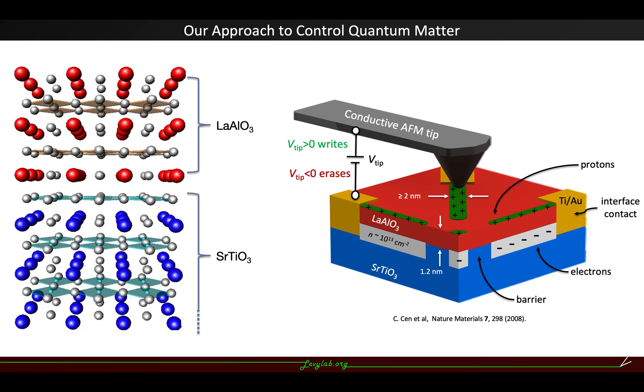Here I would like to introduce our approach to control quantum matter. The quantum matter here I'm referring to is the lanthanum aluminate strontium titanate heterostructure, and our approach to control it is using this conductive AFM lithography.